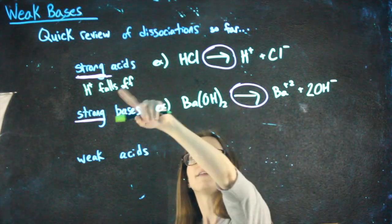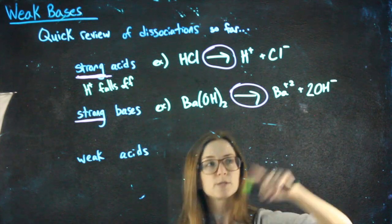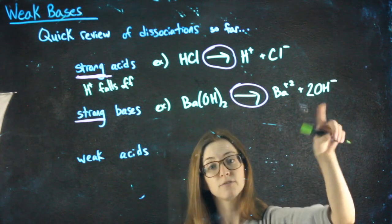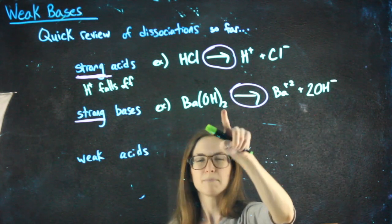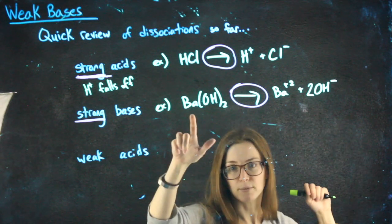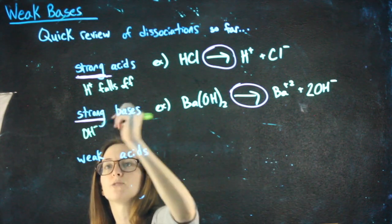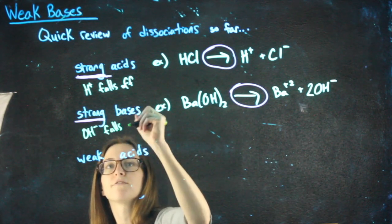So what happened here, in the acid, the H plus fell off. In a strong base, something that will always be true is the OH minus falls off. All of them, right? So it didn't matter that there were two here. We took all the OH minuses away from the Ba. We balanced with a coefficient. So we say the OH minus falls off.